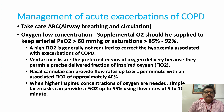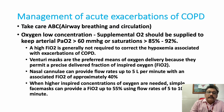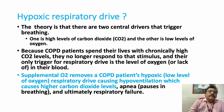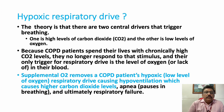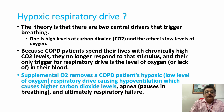Oxygen should initially be started at high flow, then quickly titrated down to maintain a saturation of 85–92%. This is because supplemental oxygen removes the COPD patient's hypoxic respiratory drive, causing hypoventilation, higher carbon dioxide levels, and potentially apnea. Therefore, avoid high-flow oxygen in stable COPD. In an emergency, give high-flow oxygen but titrate rapidly and maintain saturation at 85–90%, which is the safe level for these patients.